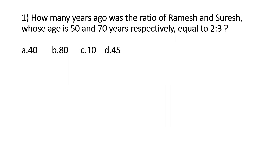The first question says: how many years ago was the ratio of Ramesh and Suresh — whose ages are 50 and 70 years respectively — equal to 2 is to 3? The key point to note is their present ages. The age of Ramesh is 50 and Suresh is 70 years.